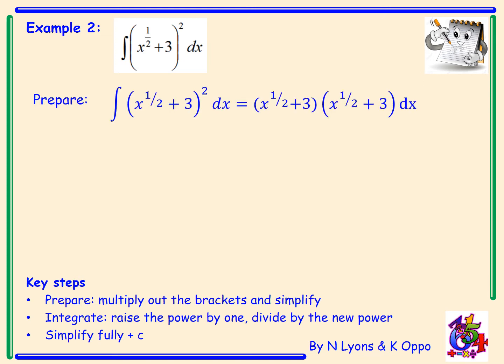So to prepare I've got the integral of x to the power 1 half plus 3 all squared. And I've got the two brackets multiplied together: x to the power 1 half plus 3 times x to the power 1 half plus 3 with respect to x. Now take time to double check my working. We're going to multiply out the brackets.